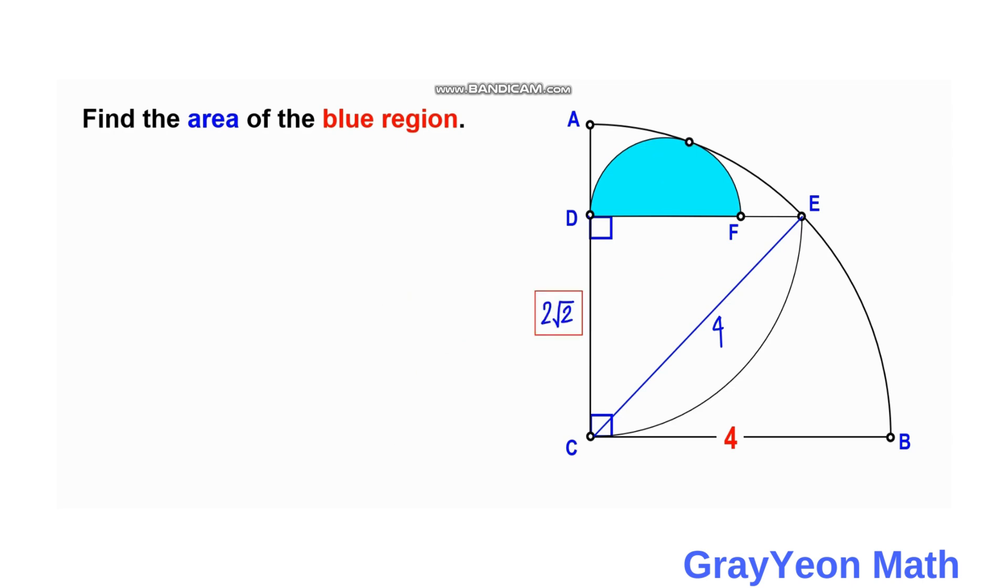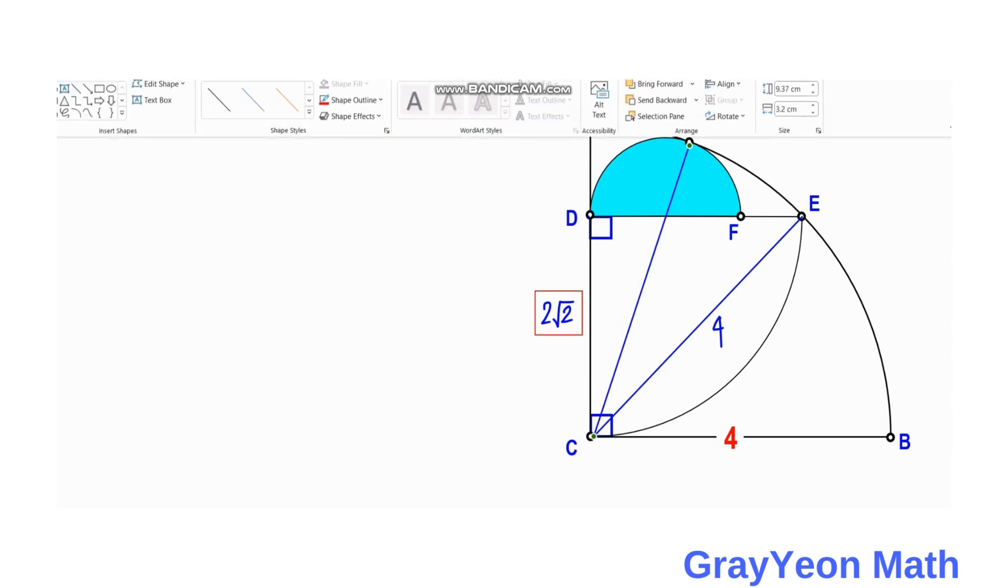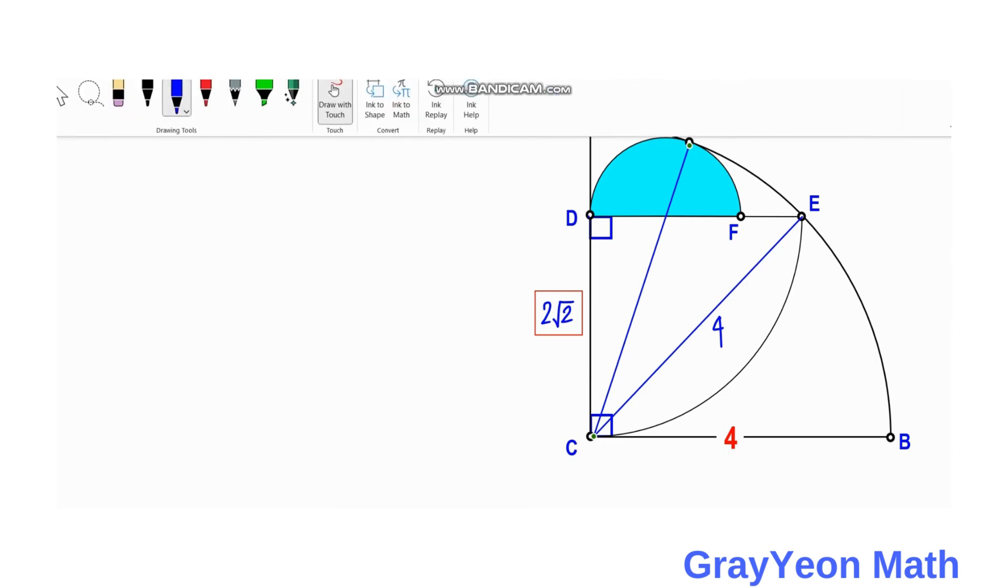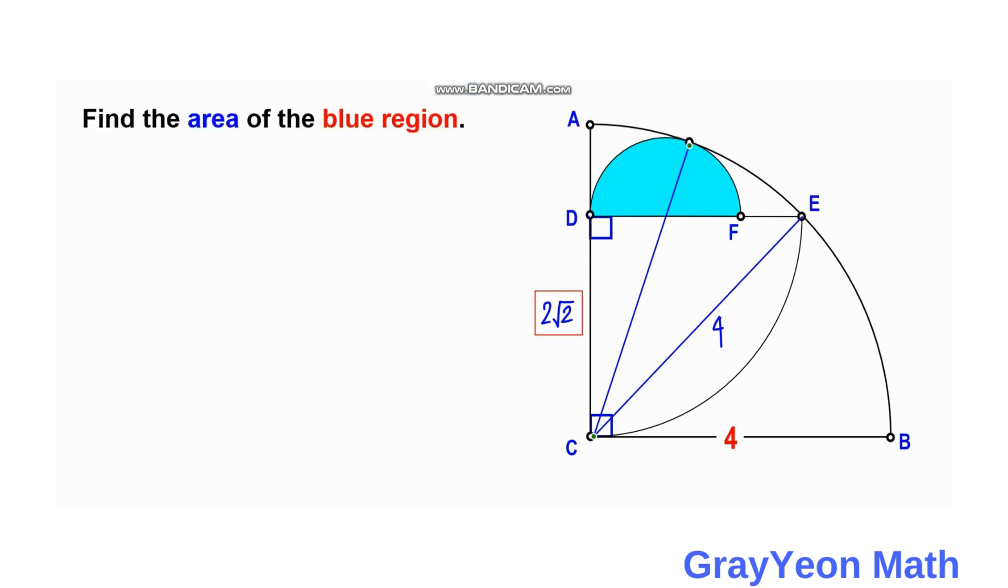Next we draw another line from this point of tangency between the semicircle and the largest quarter circle. We copy this line, and this will also be the radius. If this is the radius, this is also 4. Since they are mutually tangent, then this should pass through the center of this semicircle.